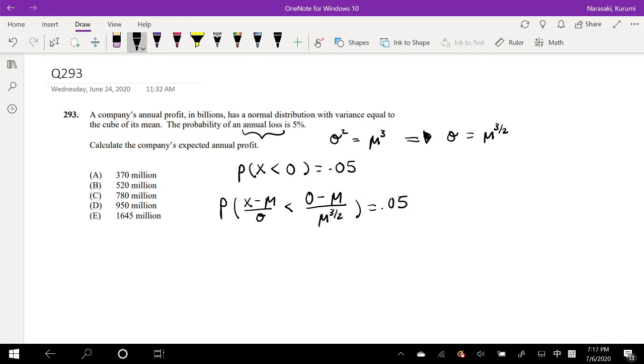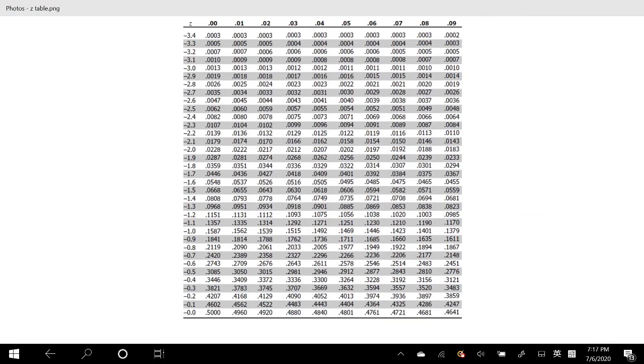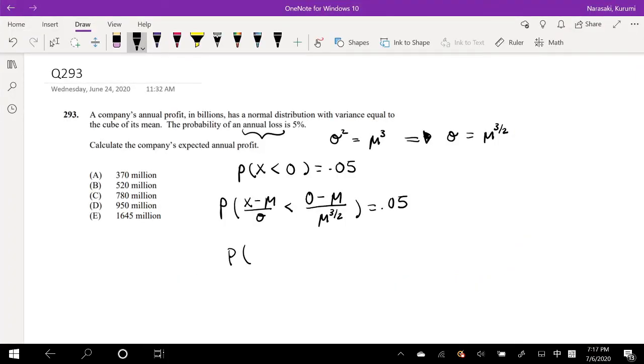But this is not normalized yet. So 0.05 in Z score terms, 0.05, which is around negative 1.64. So if we normalize it, this is equal to probability of Z less than negative mu over mu to the 3/2 is equal to negative 1.64.